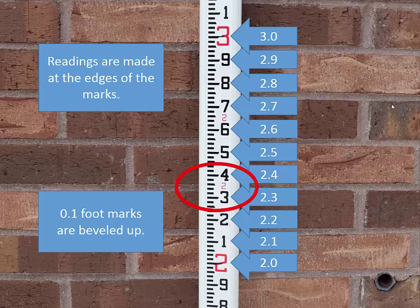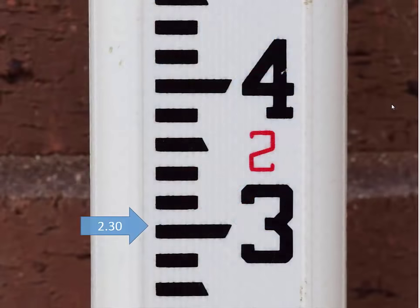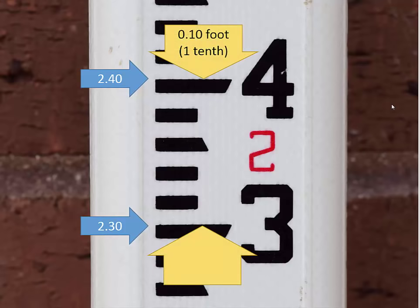Let's see a closer view of this portion of the rod. The top edge of this mark is 2.30 feet above the bottom of the rod. See how the point of the bevel falls on this edge? The top edge of this mark is 2.40 feet above the bottom end of the rod. These two marks are 0.10 feet or one-tenth of a foot apart.